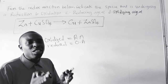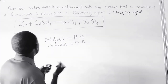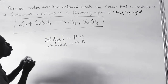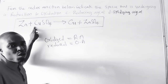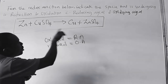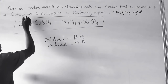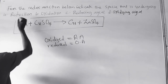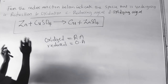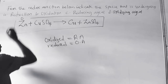On that note, let's look at the question. The first step we do is to assign oxidation numbers to the species we have. So for zinc, it assigns the oxidation number of what is alone — and for this case it is equal to 0.